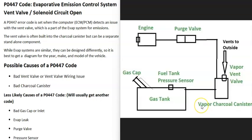Basically, vehicles have what's called an EVAP system that takes all the gas vapors from the gas tank and feeds them up to the engine to be burnt away, so they don't escape into the atmosphere. This is for emissions. When you get this P0447 code, the computer is seeing a problem with one of these EVAP components, mainly with the vent valve.